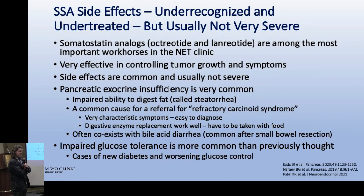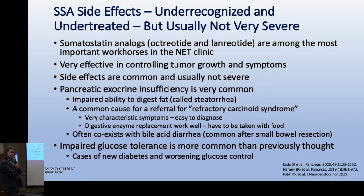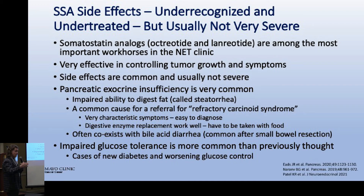Regarding somatostatin analog side effects: diarrhea or loose stools from inability to digest fat is definitely present. But the problem is that patients with neuroendocrine tumors can have diarrhea for different reasons - from carcinoid syndrome, from the drug limiting fat digestion, or from prior surgery where a piece of small bowel was removed, causing bile acid diarrhea. All three can come together, and we have tests and treatments for all of them, but you have to think about it and not just assume all diarrhea is carcinoid syndrome.